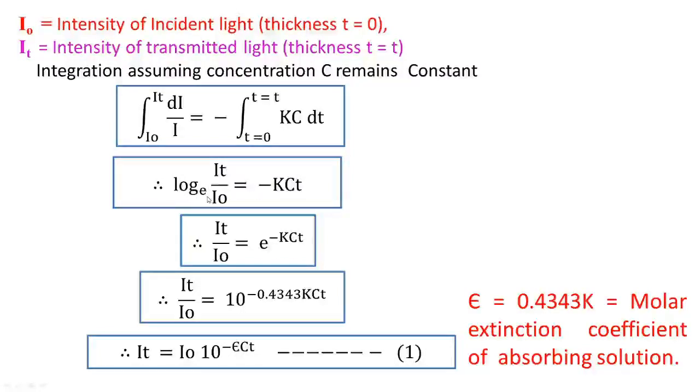By taking the antilog of this equation, we get the equation It upon I0 equals e raise to minus K times C times t. By changing the base of this equation to 10, we get the equation It upon I0 equals 10 raise to minus 0.4343K times C times t.